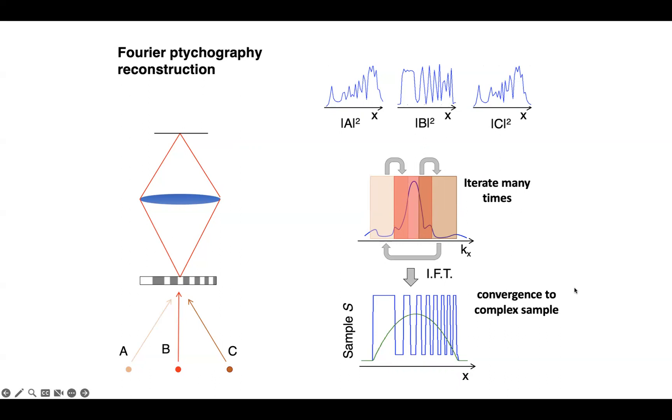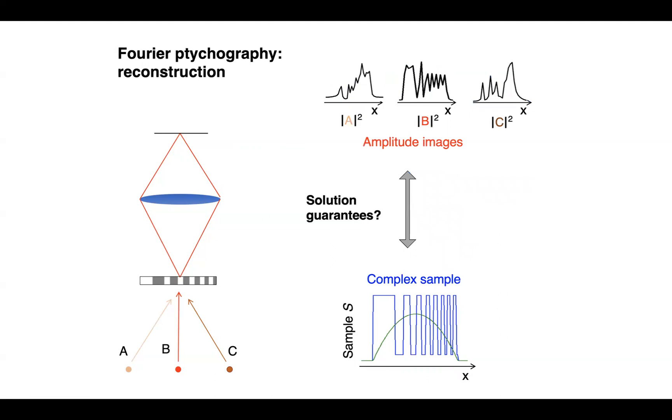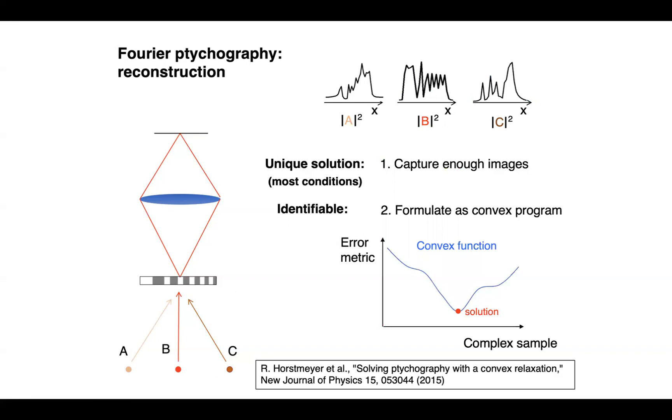So a natural question would be, well, that's really interesting, and how well does it actually work? Are there any guarantees about this solution? The applied mathematics community has been looking into guarantees for phase retrieval methods for quite some time, and for Fourier ptychography there's a few things you can say. The first is that you can obtain a unique solution under most conditions, and by most conditions I mean under conditions where the sample generally is a natural type sample, not something totally outrageous, and that you capture enough images, meaning that you have enough overlap between the different boxes or in Fourier space.